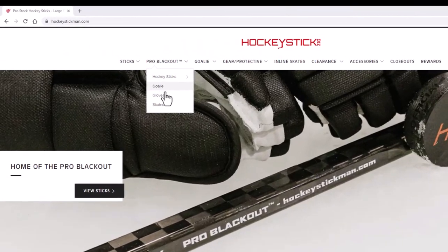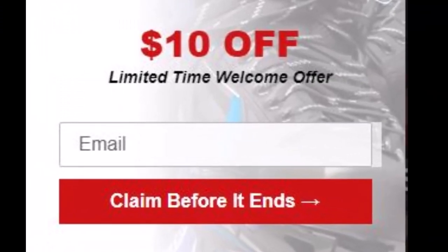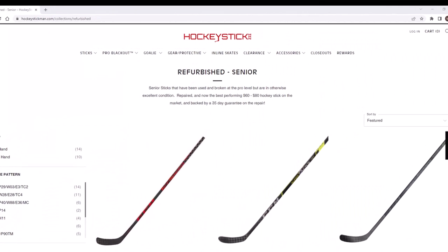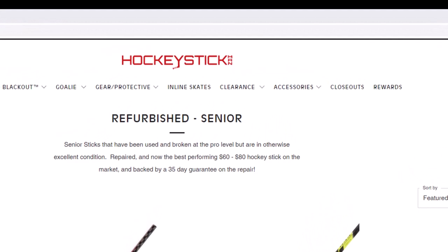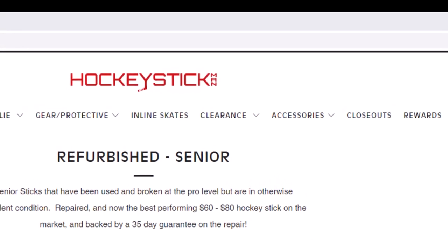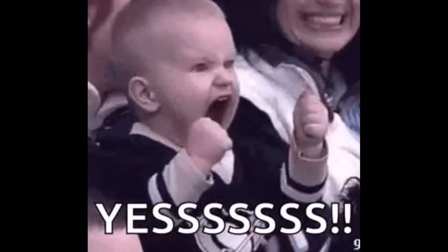They have Pro Blackout goalie sticks, gloves, and skates as well. If you're a first-time buyer, you may be able to take advantage of a $10 off coupon. And don't forget, Hockey Stick Man also offers excellent professional refurbished hockey sticks. Click the video in the upper right-hand corner to check those out. I hope this video has helped unveil the mystery of the Pro Blackout Hockey Sticks for you as it has for me. Please subscribe for more informative videos and hockey fun. Stay junkie, my friends.